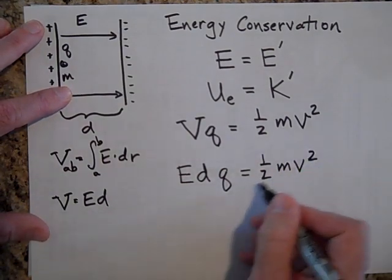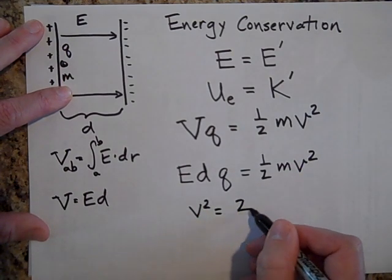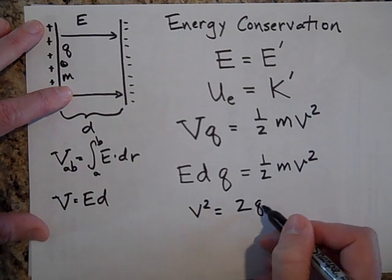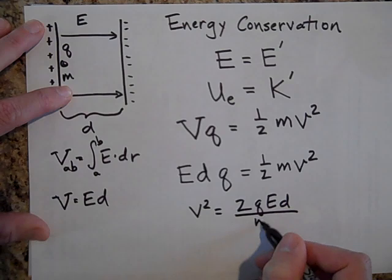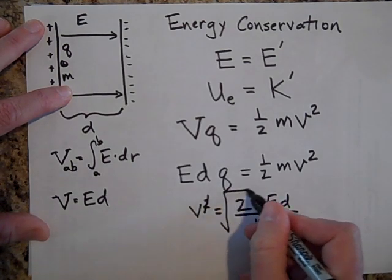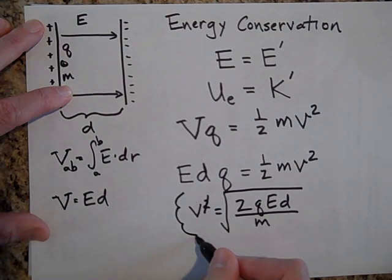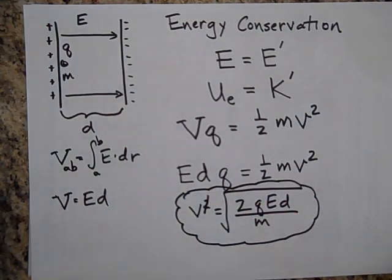So that's equal to one half MV squared. And solving for the final speed then, at the other end, it's going to be equal to two QEd all over M. Let's square root it.